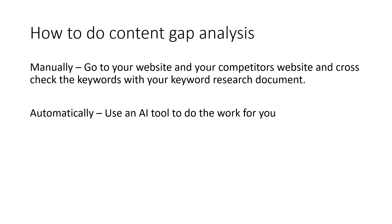So how do you actually do content gap analysis? The first option is to do it manually, which is great if you've got more time than money. Go on your website and your competitors' websites, cross-check keywords, and put everything into a keyword research document — a spreadsheet or word document. Create lists, look at different parts of your website such as homepage, product pages, and about pages, compare against competitors, and work out which keywords they're doing better on versus you, and find those opportunities.